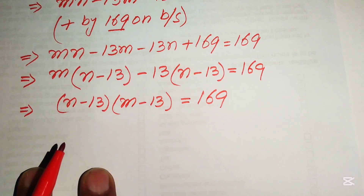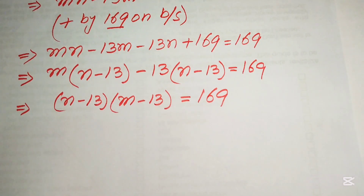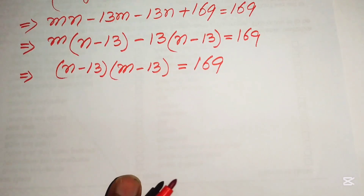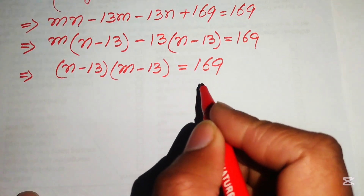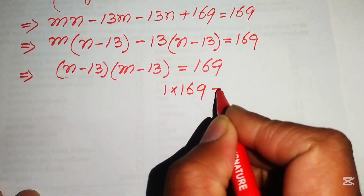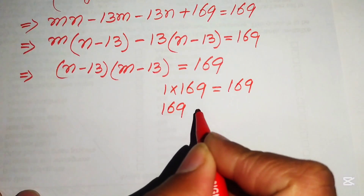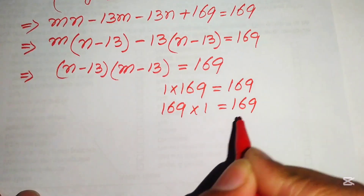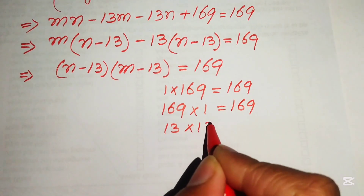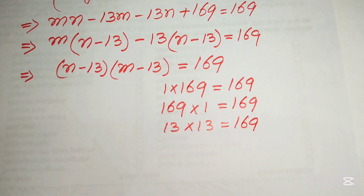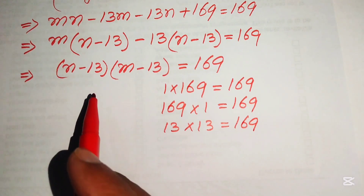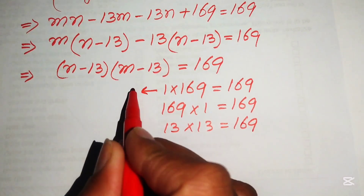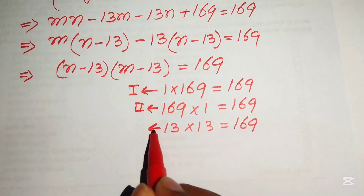On the left we have two factors multiplied together equaling 169. Since m and n are positive integers, we write 169 as a product of two positive integers: 1 times 169, 169 times 1, and 13 times 13. These give us three cases.